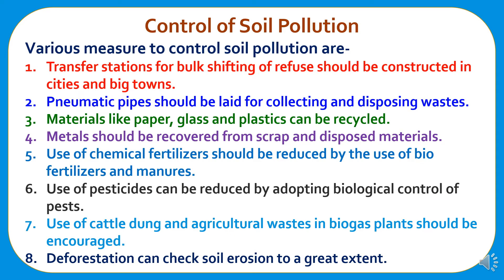Various measures to control soil pollution include: transfer stations for bulk shifting of refuse should be constructed in cities; pneumatic pipes should be laid for collecting and disposing wastes; materials like paper, glass, and plastics can be recycled; metals should be recovered from scrap; use of chemical fertilizers should be reduced by using bio-fertilizers and manures; use of pesticides can be reduced by adopting biological control of pests; use of cattle dung and agricultural waste in biogas plants should be encouraged; and deforestation check can help control soil erosion.